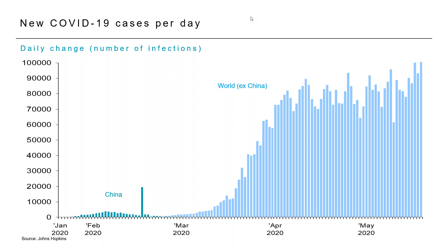The focus is now moving into the large emerging markets — those with large populations. Russia has the second highest number of infections in the world, Brazil is now third having overtaken the UK, and other emerging markets are also becoming more infected. This is rolling around the world and has a long way to go before the first wave is more effectively under control.